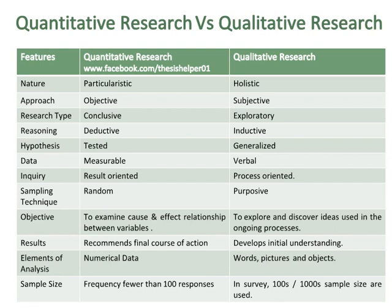The objective of quantitative research is to examine cause and effect relationships between variables, while the objective of qualitative research is to explore and discover ideas used in ongoing processes. Results of quantitative research recommend a final course of action while results of qualitative research develop initial understanding. Elements of analysis of quantitative research are numerical data, while elements of analysis of qualitative research are words, pictures and objects.